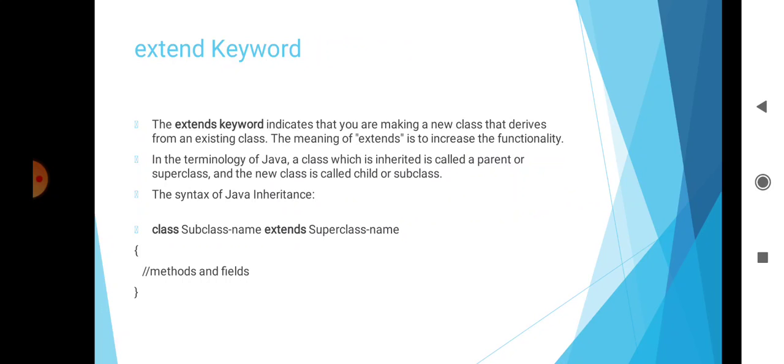The syntax of inheritance using the extend keyword is: class SubclassName extends SuperclassName, then the body of the class including methods and fields. The keyword extends specifies that properties of the superclass are extended to the subclass. The subclass will contain all methods of the superclass and can add members of its own. Remember, we cannot extend a subclass from more than one superclass.